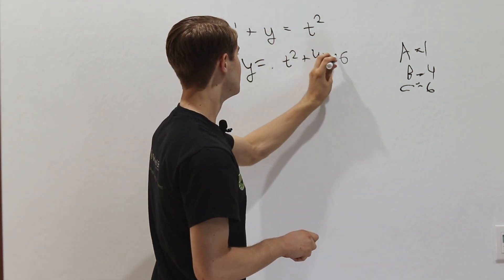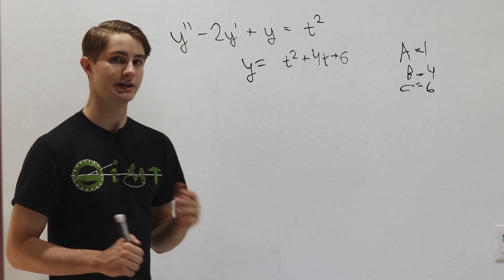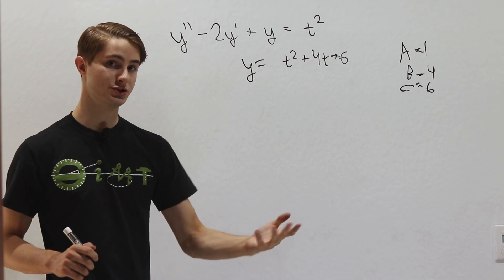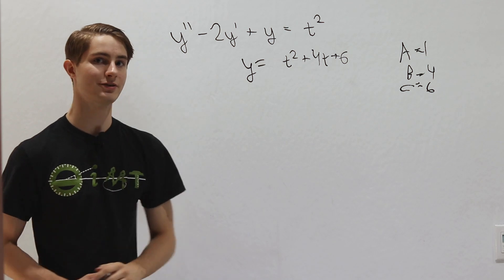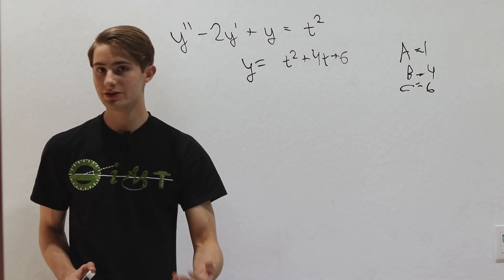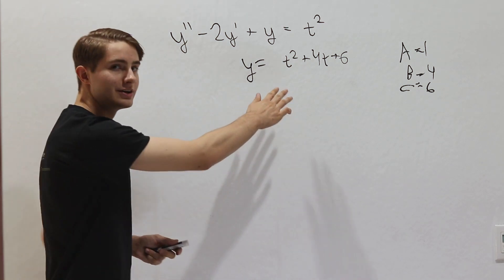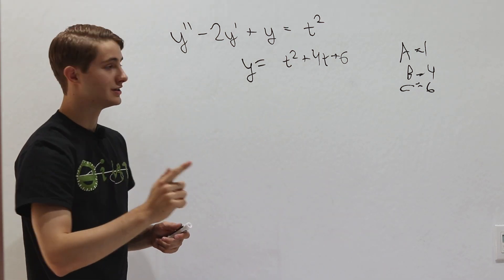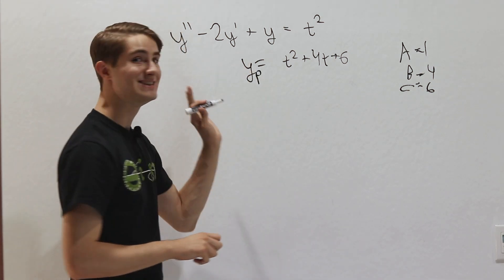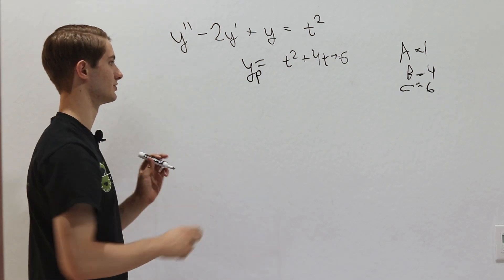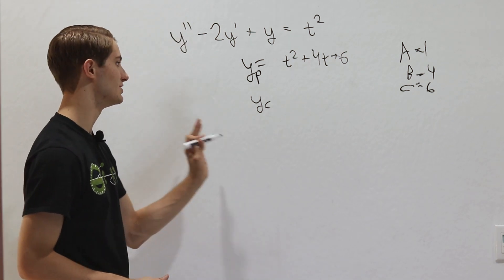You might ask: where are the arbitrary constants? Normally when solving a homogeneous second-order differential equation, we get two constants. For first-order linear equations there was a plus c from integration. But we don't have any constants here — and the answer is that this is not the entire solution. This is what we call the particular solution.